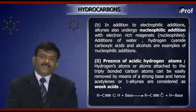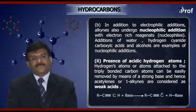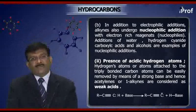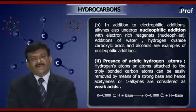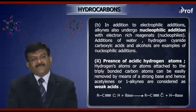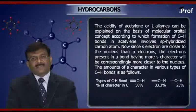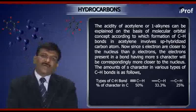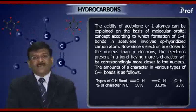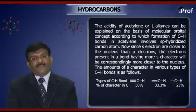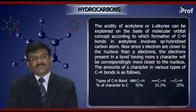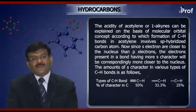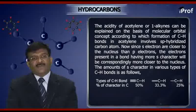Another reason is the presence of acidic hydrogen atoms. Hydrogen atoms attached to the triply bonded carbon atoms can be easily removed by means of a strong base, and hence acetylenes or 1-alkynes are considered as weak acids. The acidity of acetylenes or 1-alkynes can be explained on the basis of the molecular orbital concept, according to which formation of carbon-hydrogen bonds in acetylene involves sp-hybridized carbon atoms. Since S-electrons are closer to the nucleus than P-electrons, the electrons present in the bond having more S-character will be correspondingly closer to the nucleus.